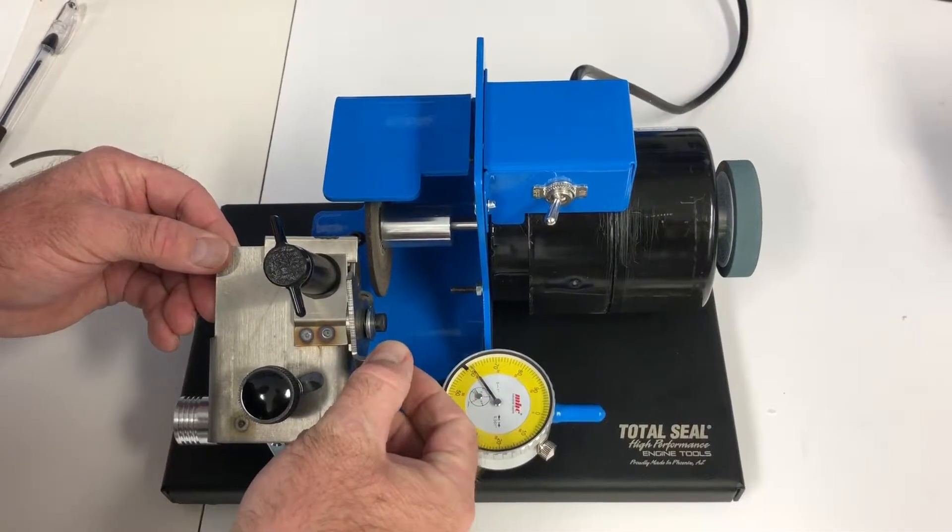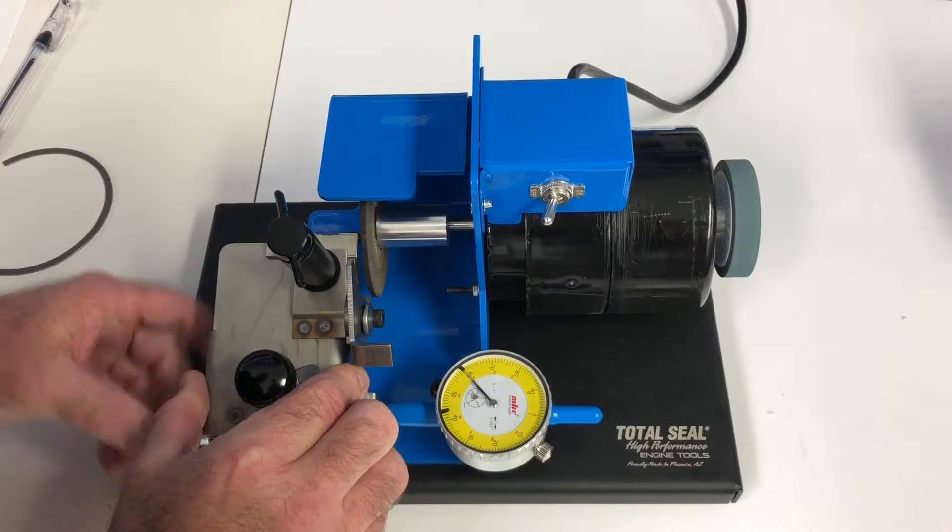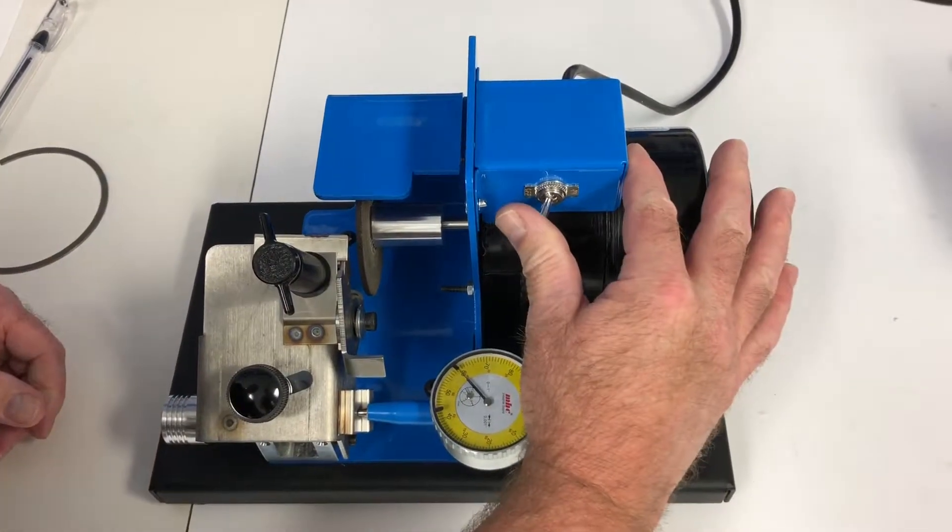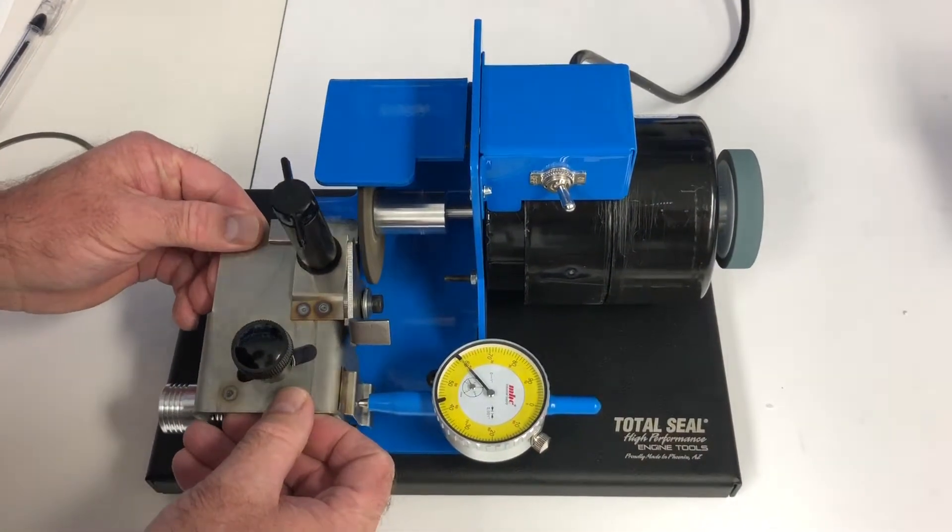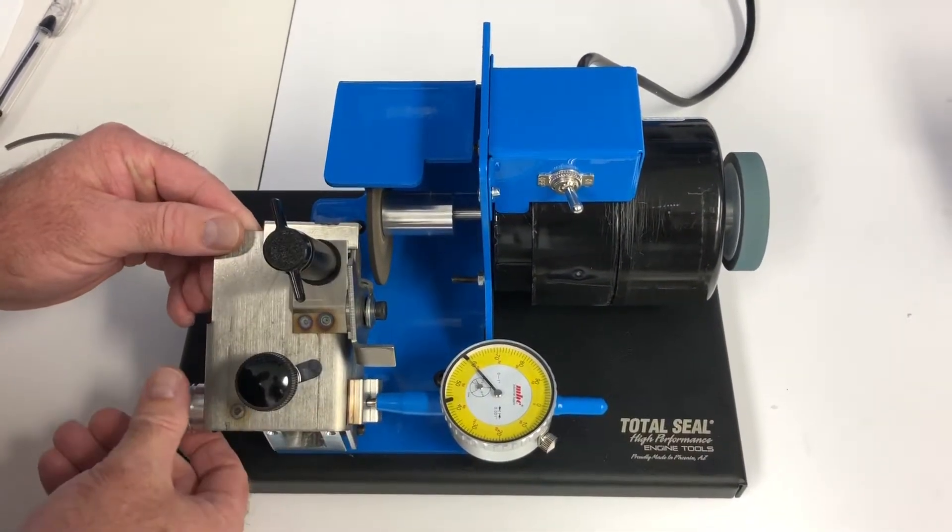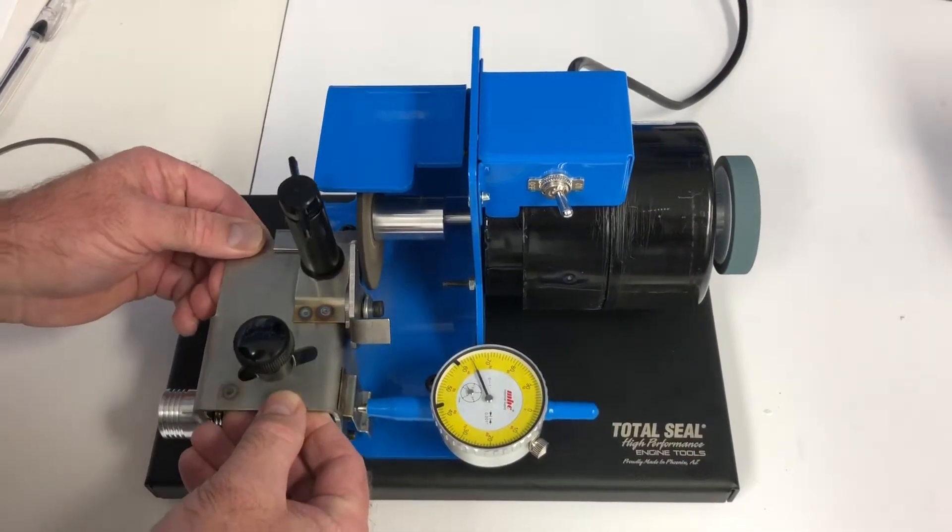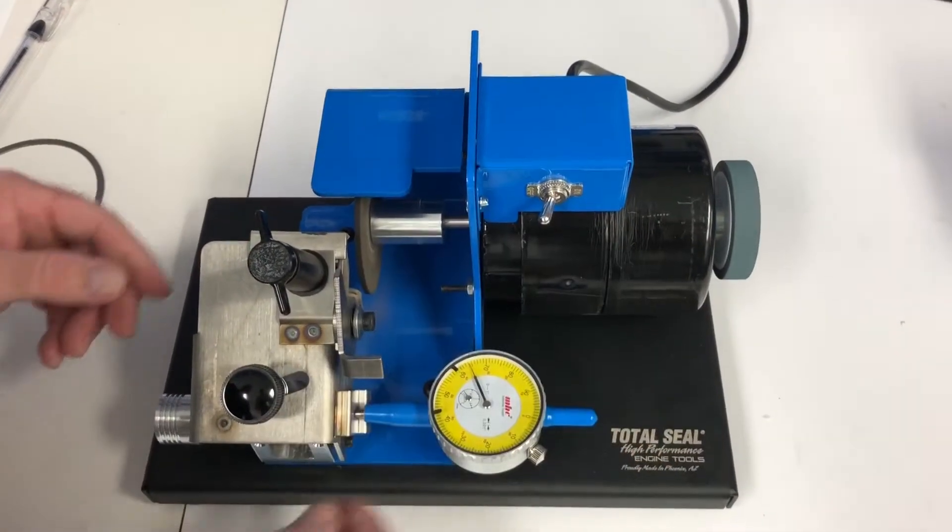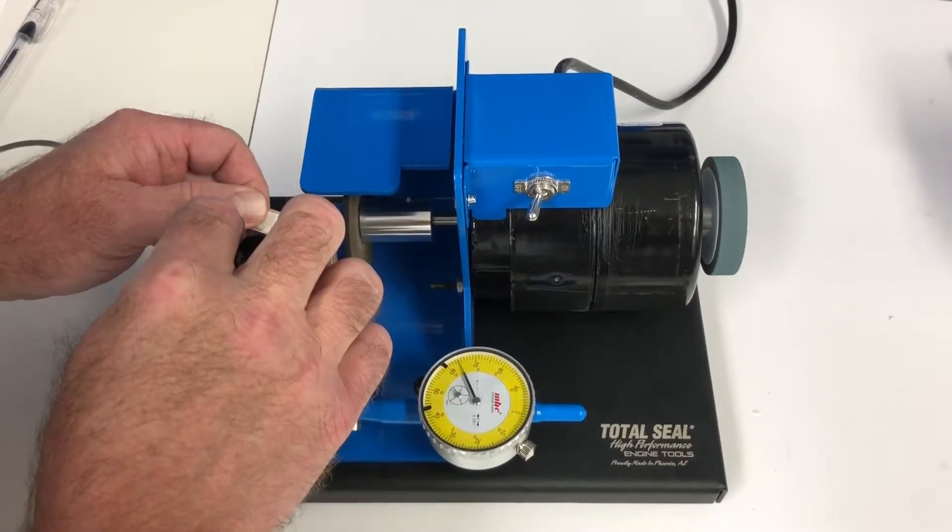Pull this back and then you're going to slowly just kind of run it into the wheel just so it starts dragging. You'll turn the filer on. You need to turn the thumb screw in more. Okay, so now you're ready to file rings. We'll shut this off. Take this out of here.